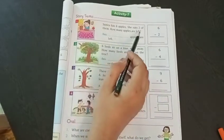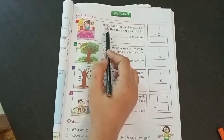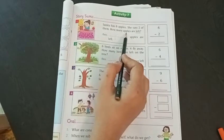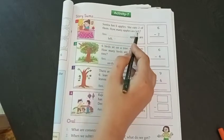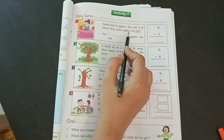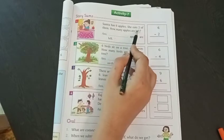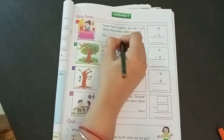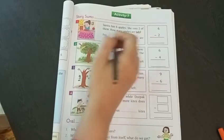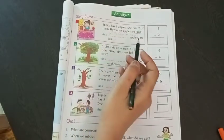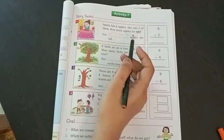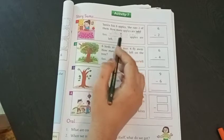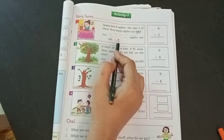Instead of giving the keyword, I am reading the question again. Sunita has 6 apples. She eats 2 of them. Now, how many apples are with Sunita now? Instead of the word left, I have changed the sentence. How many apples are with Sunita now? There's no keyword here. So how will you do? How will you know whether it is addition sum or subtraction sum?